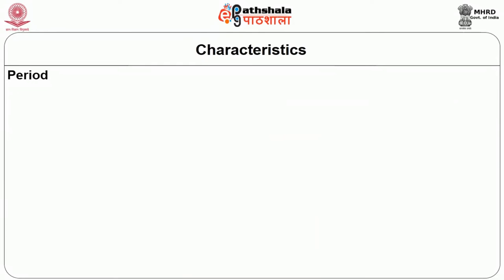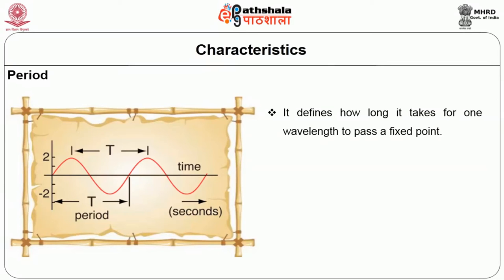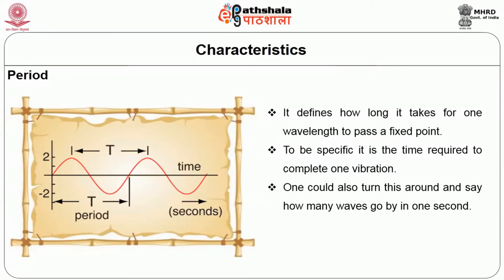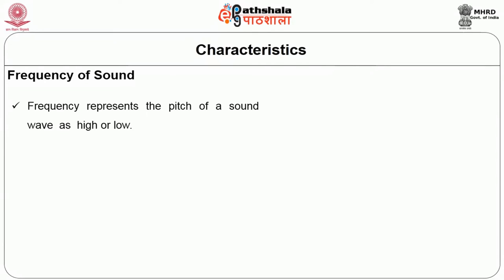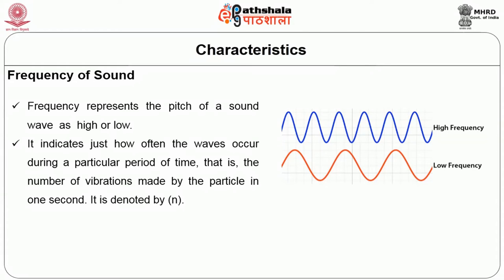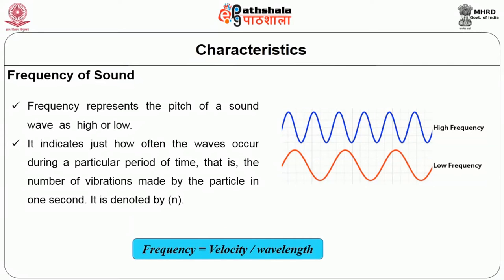The third characteristic is period — it defines how long it takes for one wavelength to pass a fixed point, specifically the time required to complete one vibration. The symbol is T, the unit is seconds. The fourth characteristic is frequency, which represents the pitch of a sound wave as high or low. It indicates how often the waves occur during a particular period — the number of vibrations made by the particle in one second, denoted by lowercase n. Frequency equals velocity divided by wavelength.